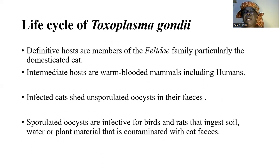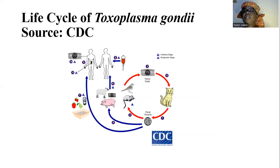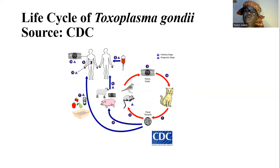Infected cats are known to shed unsporulated oocysts in their feces. These unsporulated oocysts will require one to five days to develop into what is called the infective sporulated oocysts, which can be found in the soil and plant vegetation.